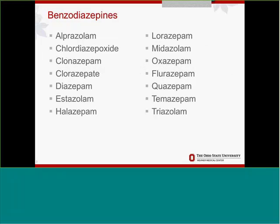Everyone's pretty familiar — there are a number of benzodiazepines out there. They all work the same way: they all potentiate the effects of gamma-aminobutyric acid, which is one of the major inhibitory neurotransmitters in the brain, to decrease firing or decrease excitation in the brain. They do have differences in their pharmacokinetics and activity profiles, so they're used a little bit differently.